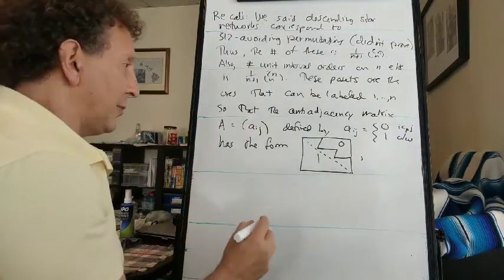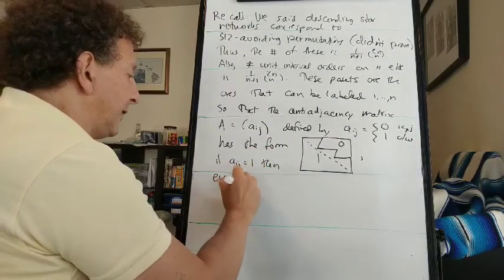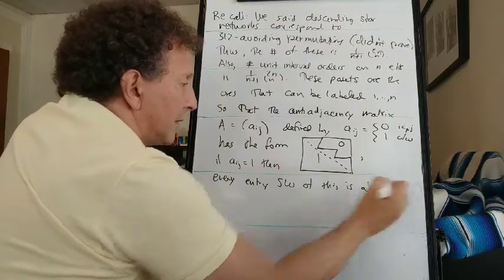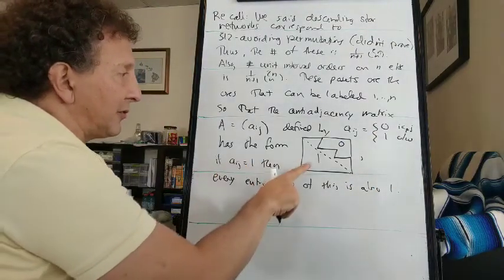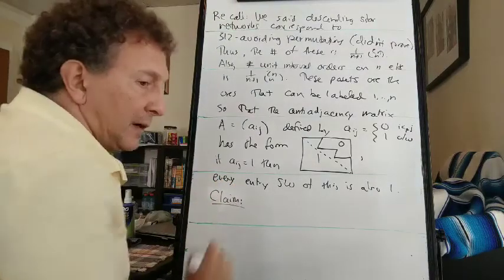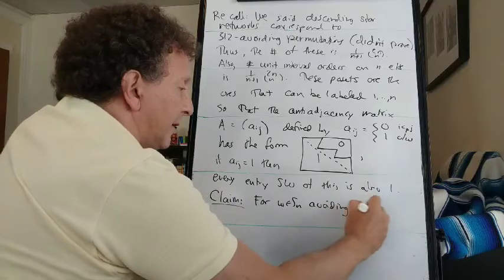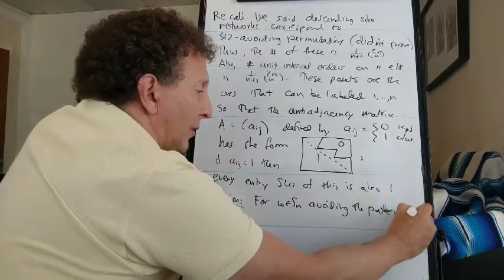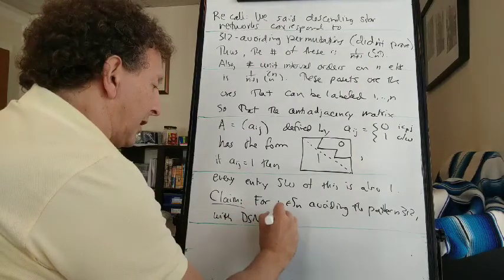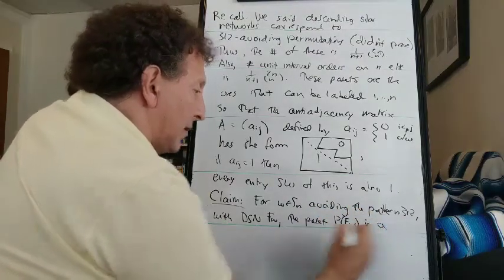Another way to describe this form is to say that if A_ij equals 1, then every entry southwest of this is also 1. Or equivalently, if some entry is 0, then every entry northeast of that is also 0. Now I claim that for W avoiding the pattern 3, 1, 2 with descending star network FW, the postset P of FW is a unit interval order.